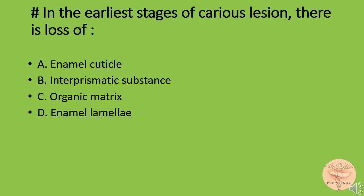In the earliest stages of a caries lesion, there is loss of: option A) enamel cuticle, option B) interprismatic substance, option C) organic matrix, or option D) enamel lamella. The correct answer is option B: interprismatic substance.